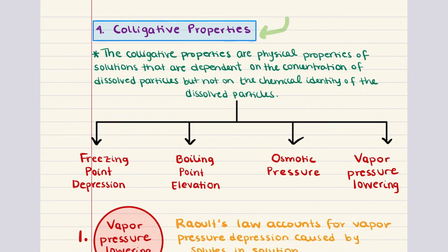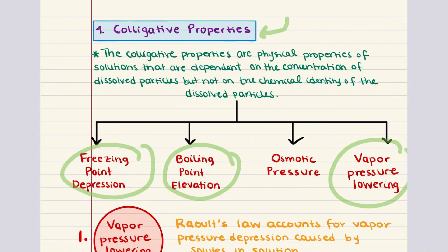Colligative properties are physical properties of solutions that depend on the number of solute particles in a given amount of solvent and not on the nature of the solute particles. These properties arise because solute particles interfere with the interactions between solvent molecules. The key colligative properties include vapor pressure lowering, freezing point depression, boiling point elevation, and osmotic pressure.